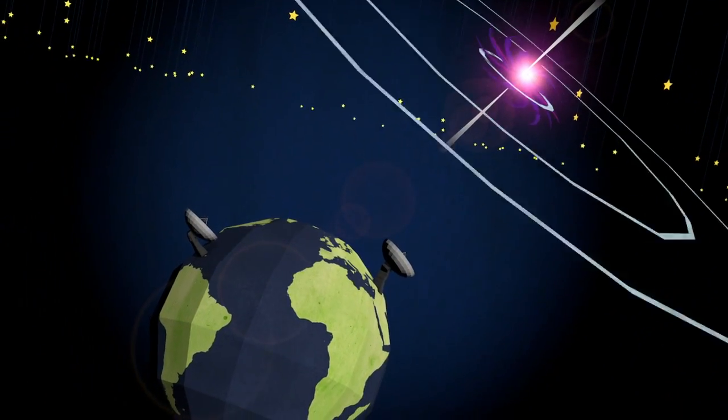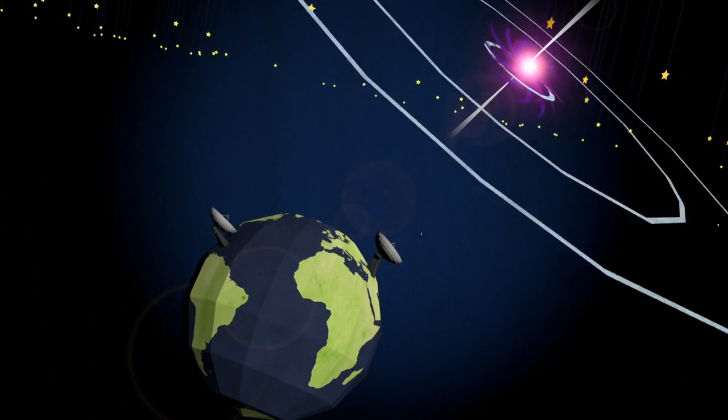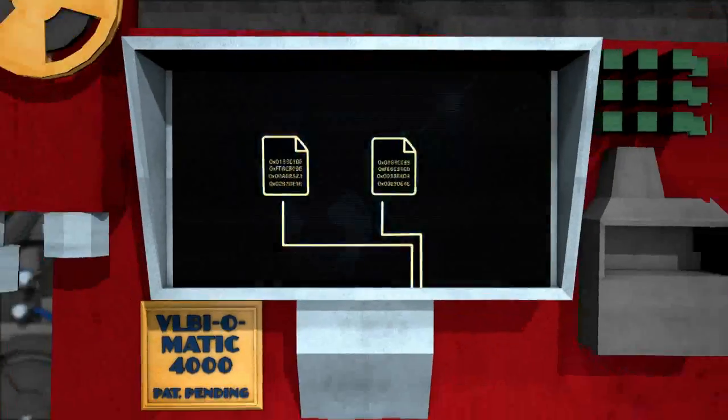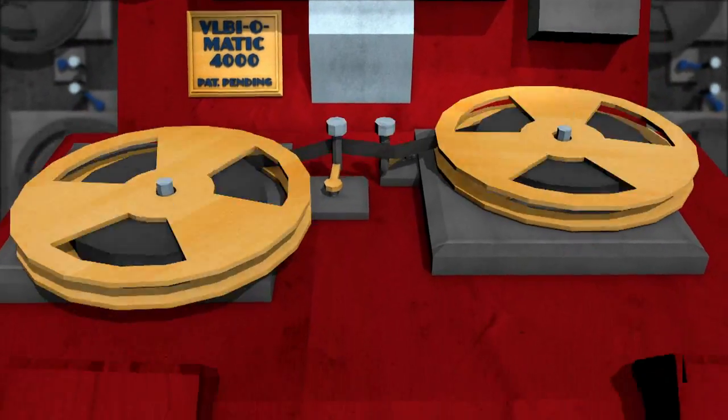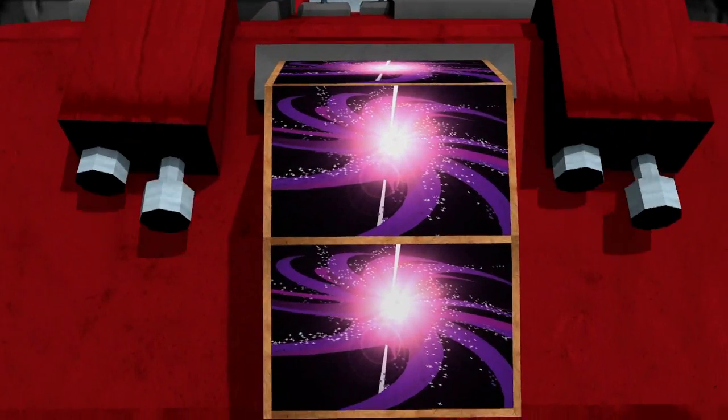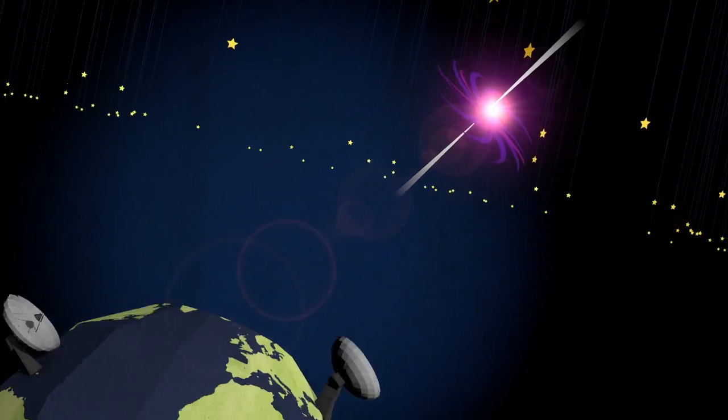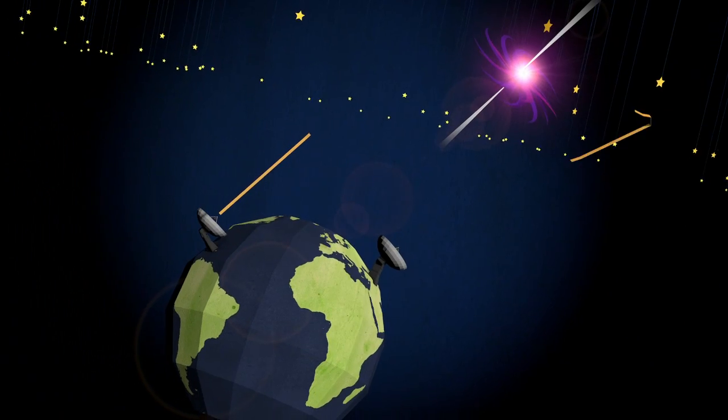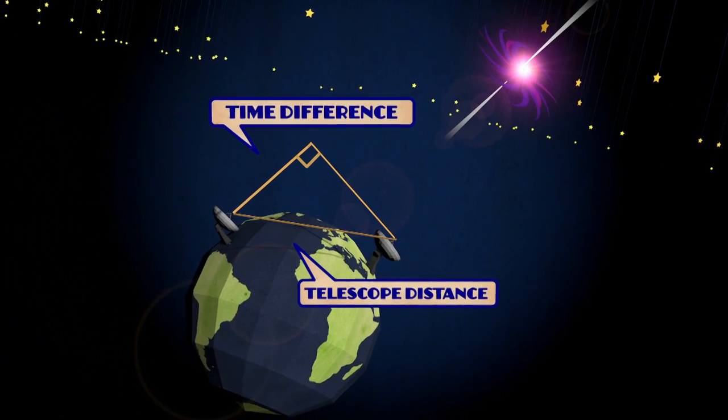Basically, when a quasar emits a radio wave, that wave reaches different telescopes at different times. For astronomy, you'd use a computer to imitate a giant telescope and get a good picture of the quasar. But if you instead pay close attention to the time differences, you can use geometry to figure out how far apart the telescopes are.